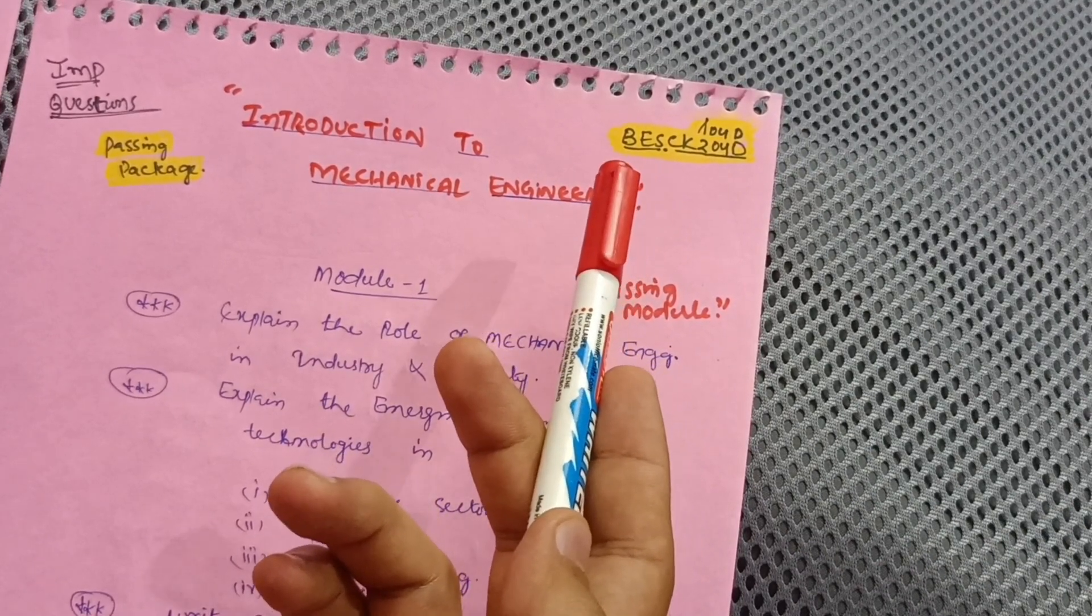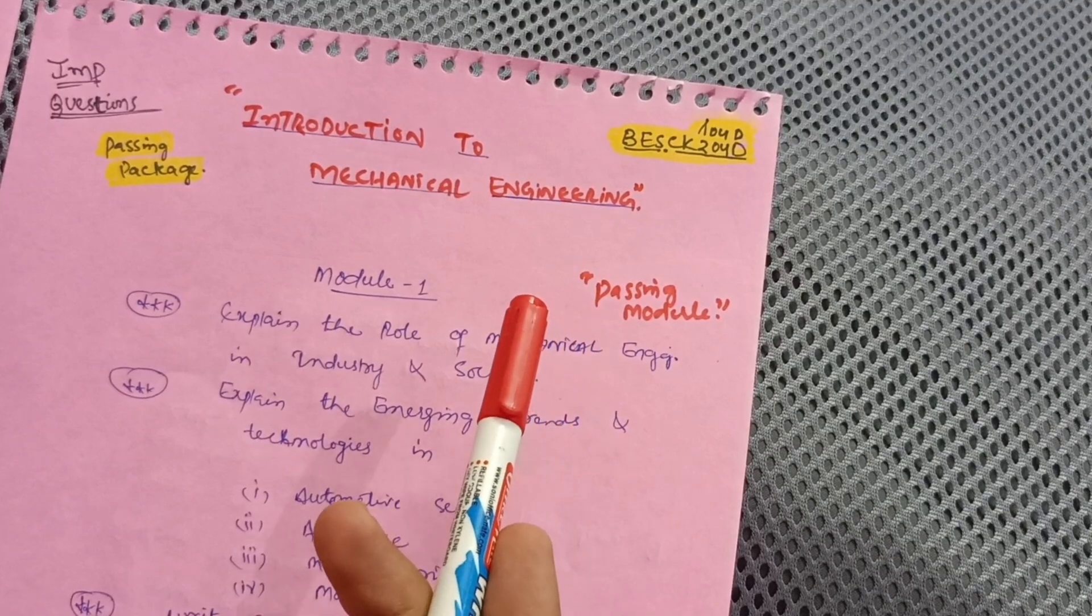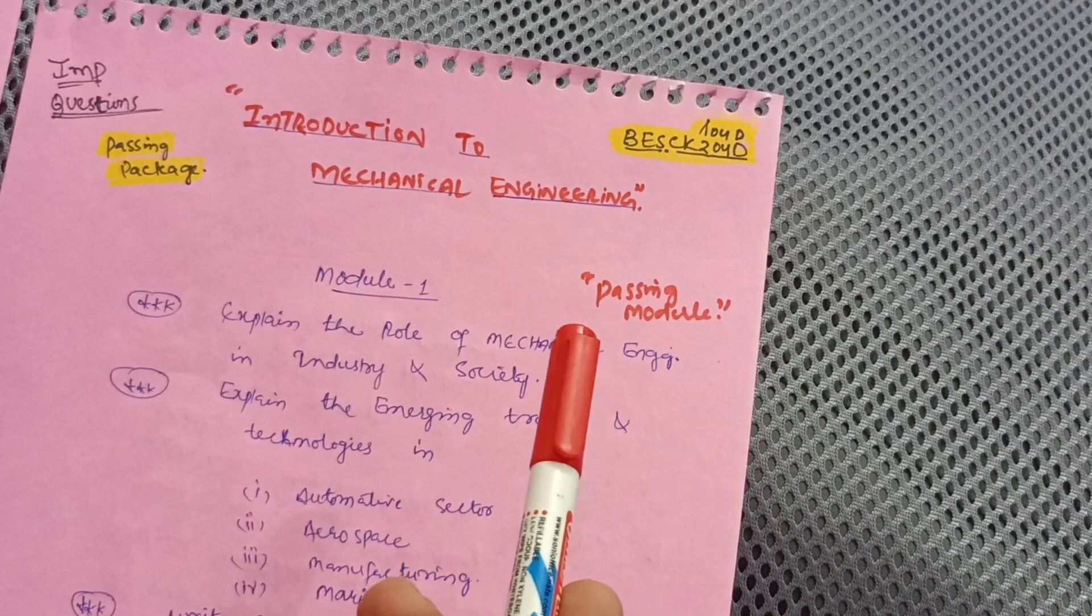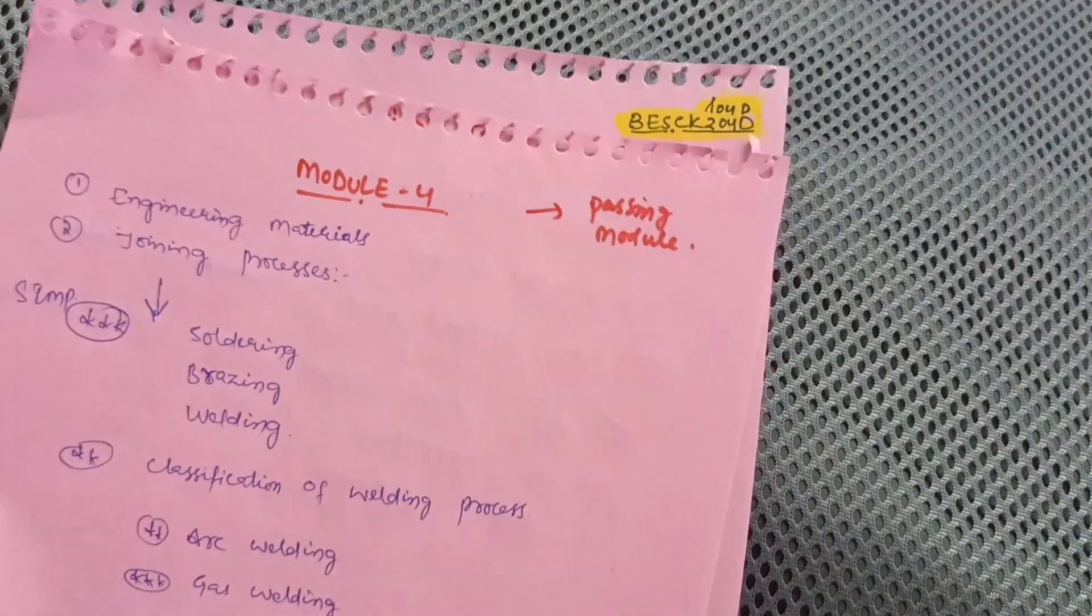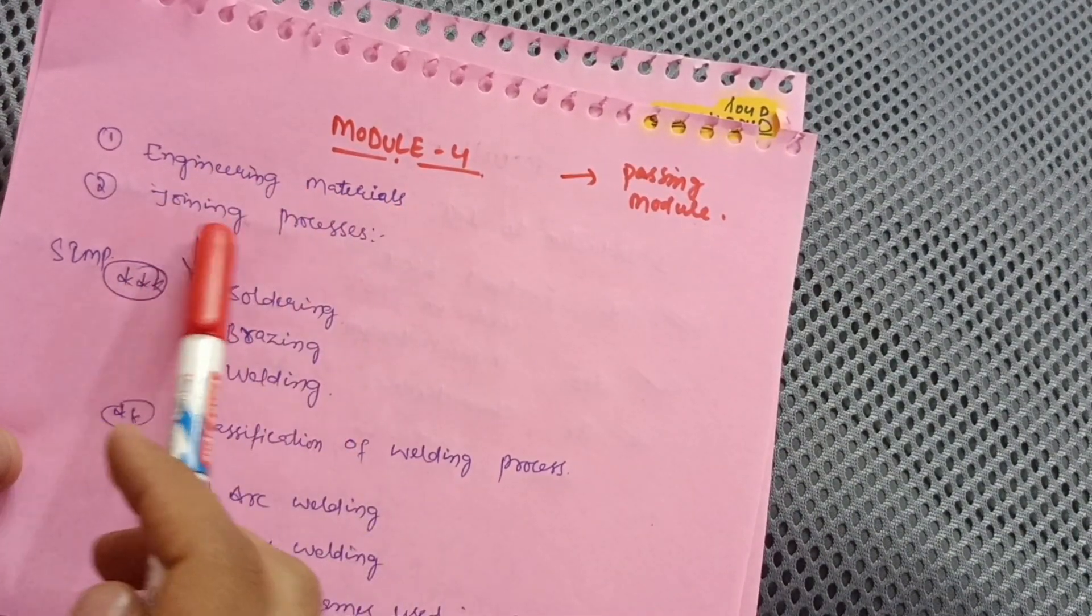Let me discuss some passing modules in which you have to cover only six questions by which you can conquer 20 marks from three modules which are the simpler ones. Let me start with Module 4, which is the passing module, in which engineering materials and joining processes are there.